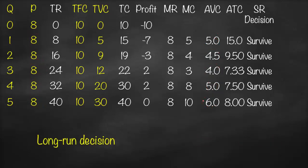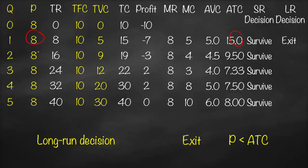For the long-run decision, the firm should exit the market if price is lower than average total cost. At Q1: 8<15 → exit; Q2: 8<9.5 → exit. Both show negative profit, meaning losses, so the firm should leave the market permanently. At Q3: 8>7.33 → survive; Q4: 8>7.5 → survive; Q5: 8=8 → survive and stay in business.